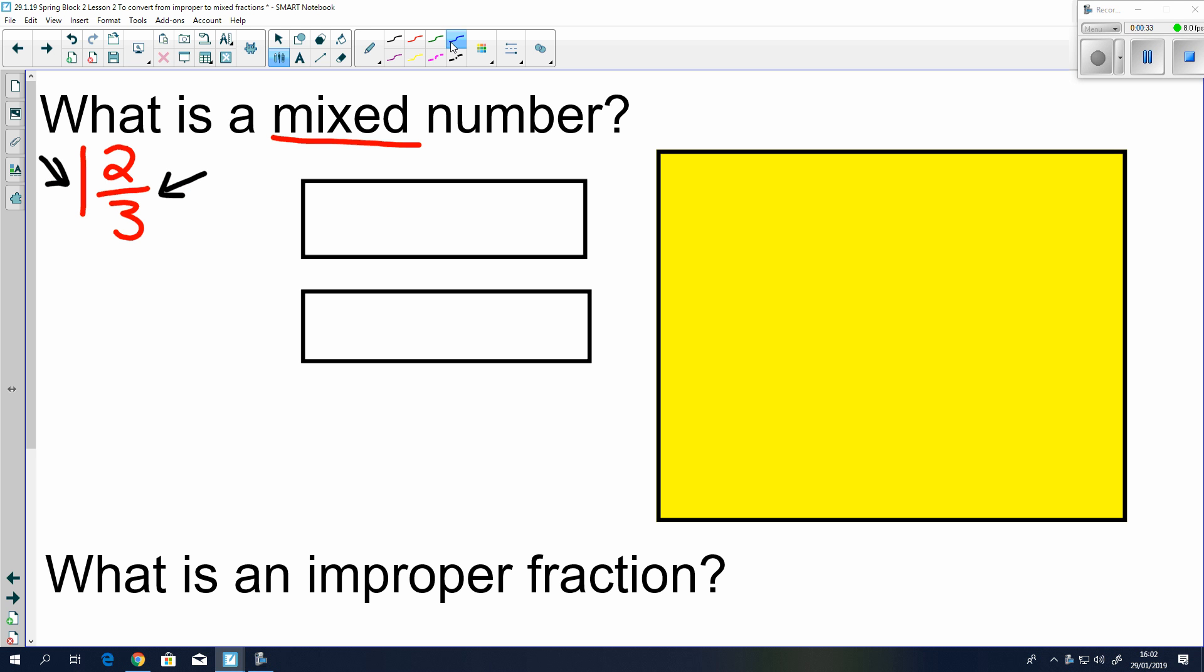If we're talking about an improper fraction, that means that instead of having a whole number and then the fraction, you have a numerator that's larger than the denominator. So, 1 and 2 thirds would be the same as 5 thirds.